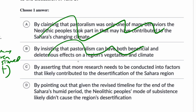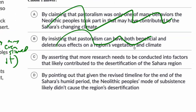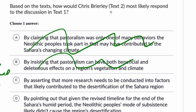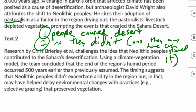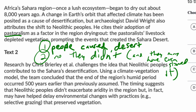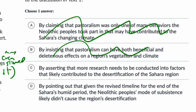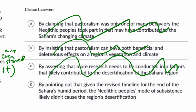Answer choice C: 'by asserting that more research needs to be conducted into factors that likely contributed to desertification.' On the face of it, Brierly probably wouldn't disagree with that — but that's not the gist of the second passage. He would point to his own research and say it challenges the view in Text 1. He wouldn't say more research is needed; he'd say listen to the research he and his colleagues have already done.